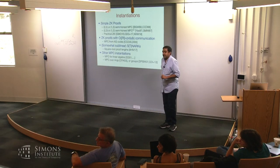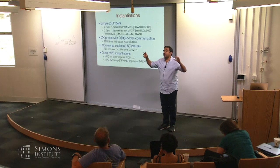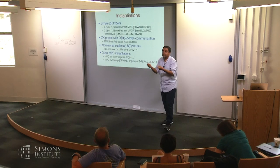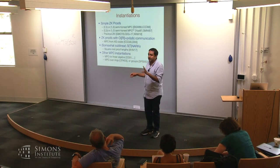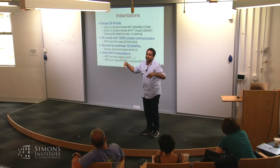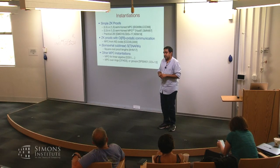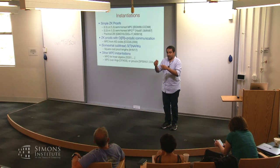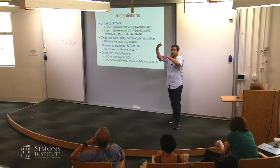During Q&A: To get negligible soundness you can make the verifier commit to the challenge before the prover sends commitments, then open it—this makes it private coin (Goldreich-Kahan style), allowing the simulator to know where to cheat after rewinding. Another approach is to get honest verifier zero-knowledge and apply Fiat-Shamir. Parallel repetition works for honest verifier ZK; for the malicious setting, some additional work is needed.